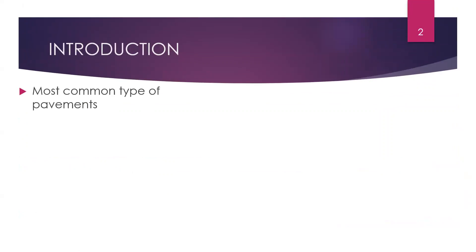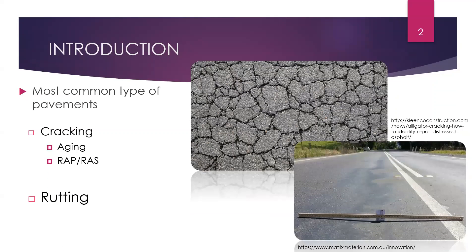More than 90% of the roads around the world, in the United States or in Europe, are surfaced with asphalt pavement. This is mostly because of asphalt pavement advantages such as easy installation and easy repair. However, because of different parameters such as poor construction, poor quality material, or climate conditions, different types of distresses appear in asphalt pavement. One of the most common types of distresses is cracking.